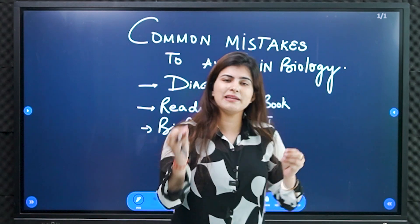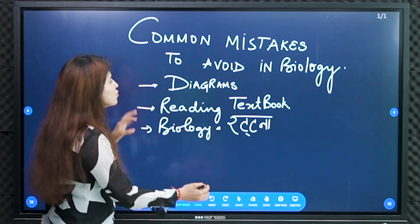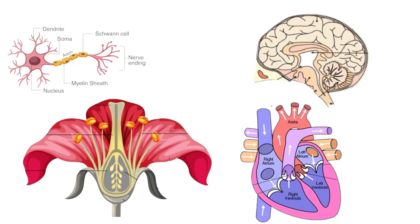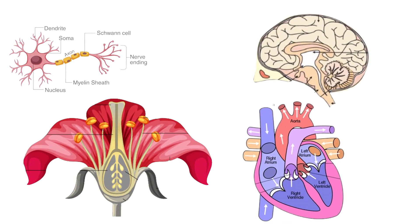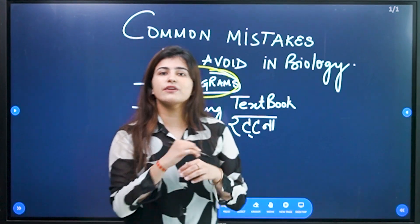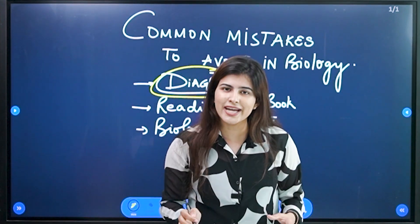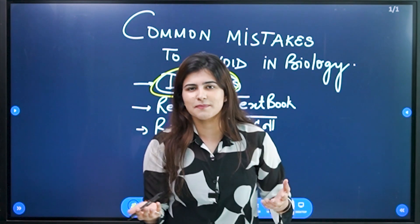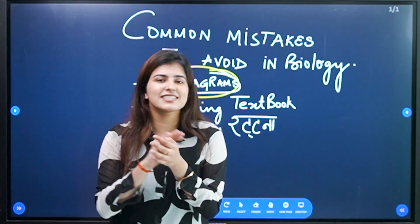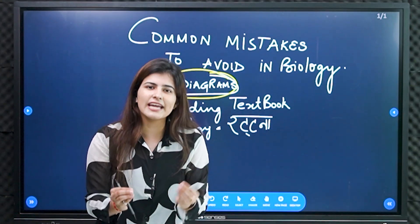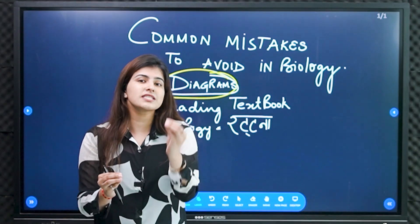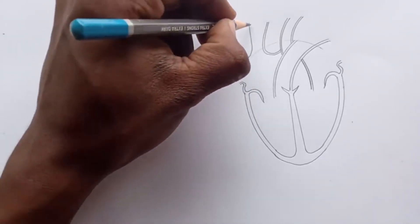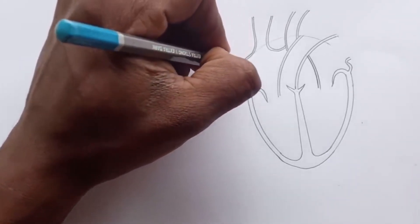The first mistake is that you forget diagrams. You completely forget diagrams — you don't focus on them. You think the pictures in the book are there just to make it interesting. But NCERT is not doing that; they are giving pictures which means it is possible for them to come in the exam. We have to draw each picture and diagram.